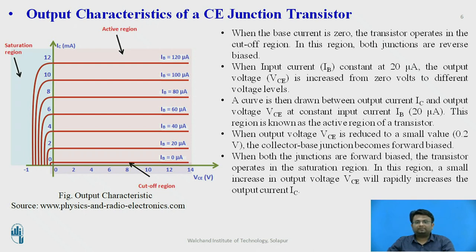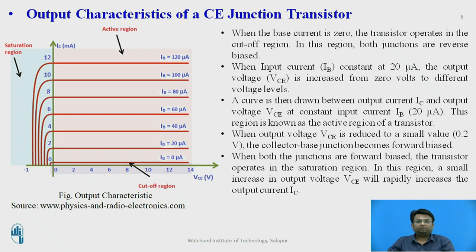When both junctions are forward biased, the transistor operates in the saturation region. In this region, a small increase in VCE will rapidly increase IC. Now that we have observed the input and output characteristics, let us simulate the common emitter configuration in LTSPICE software.